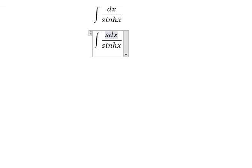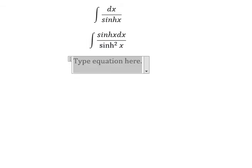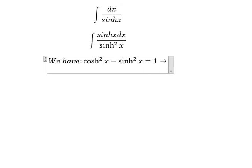We need to multiply with sinh x on numerator and denominator. Next we have the formula that's about cosh² x minus sinh² x equals to 1, so we have sinh² x in here.